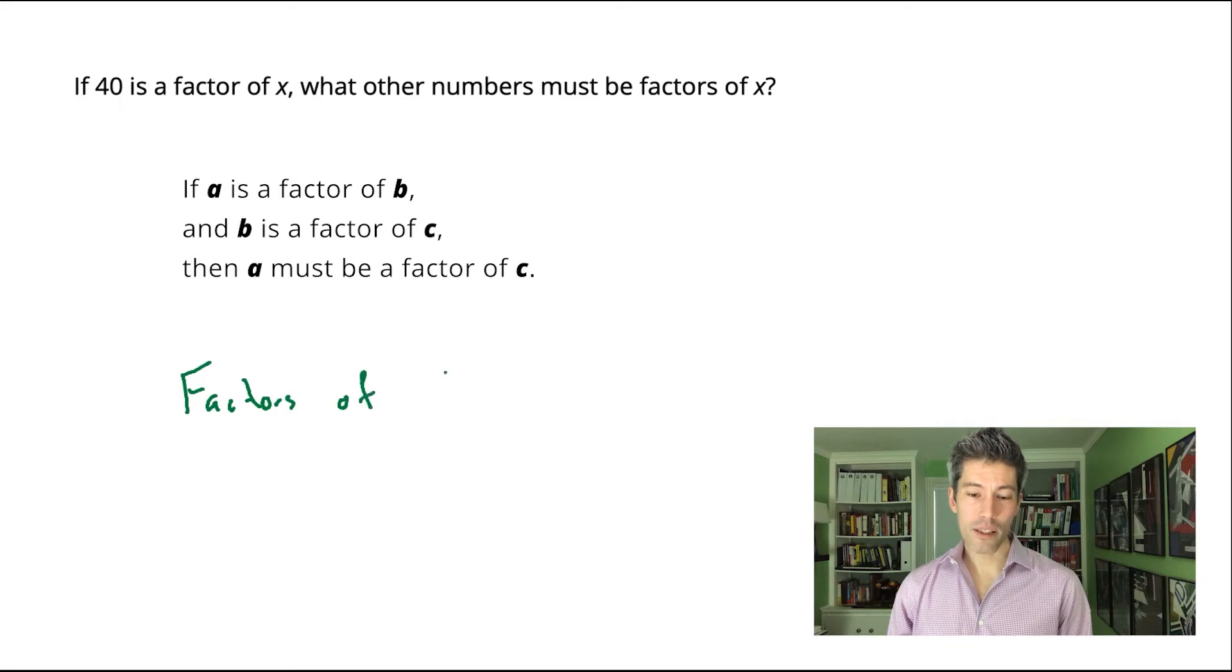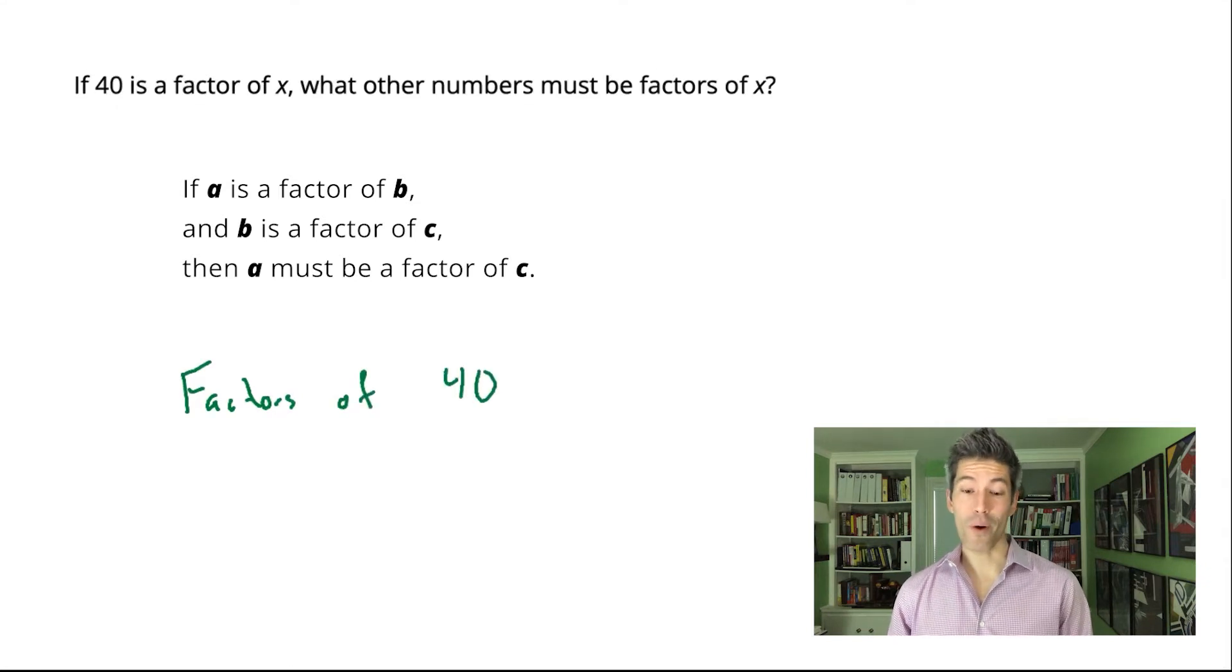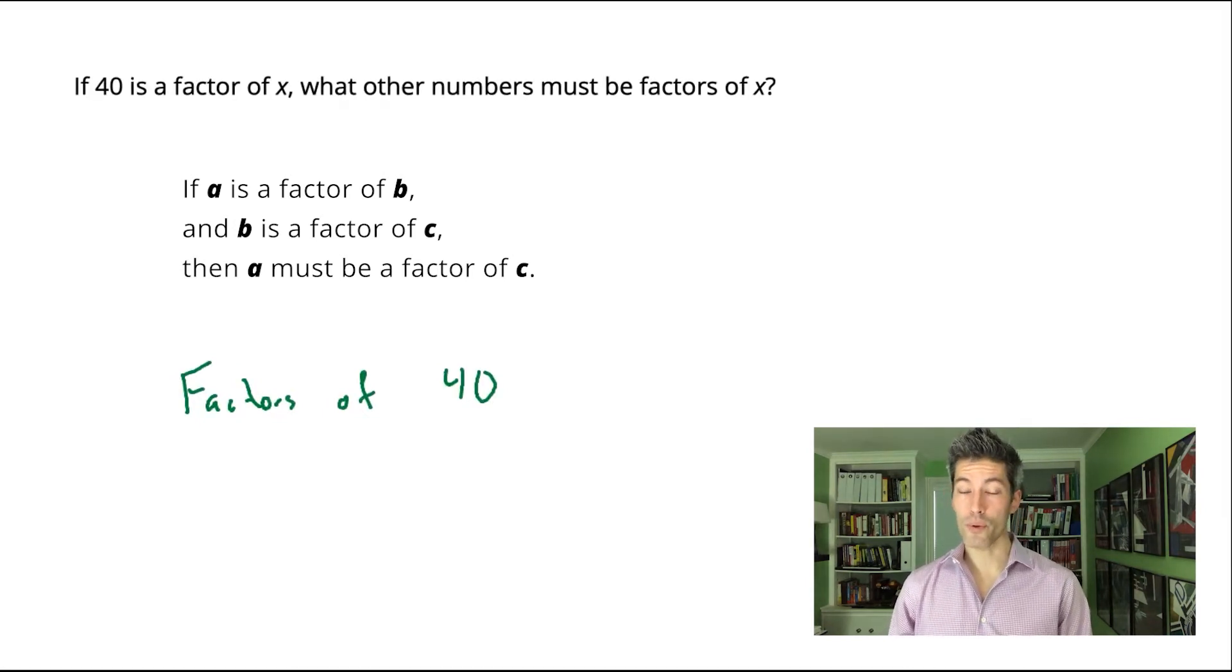Now, I like to list out factors in a certain way. I like to start with the smallest factor and pair it with the largest factor and go through systematically like that. The smallest factor of 40 is 1 because 40 divided by 1 leaves an integer amount. 40 is also a factor of itself because 40 divided by 40 is 1 with no remainder.